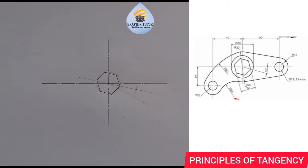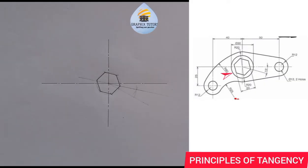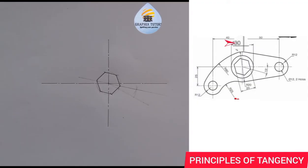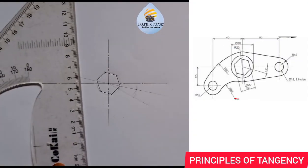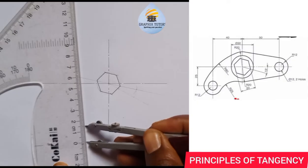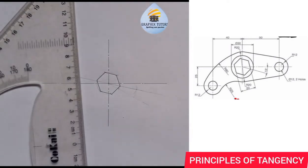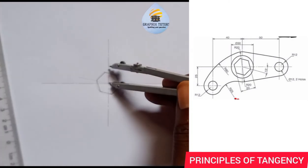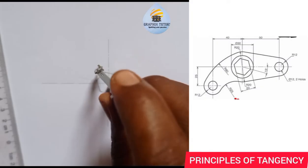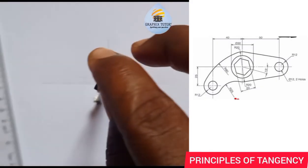After we've done that, the next thing we'll do is draw the circle surrounding this hexagon. The diameter of the circle is 30, meaning the radius is 15. So I'm going to take my radius of 15 — from 0 to 15 — place it at the center, and draw a circle.